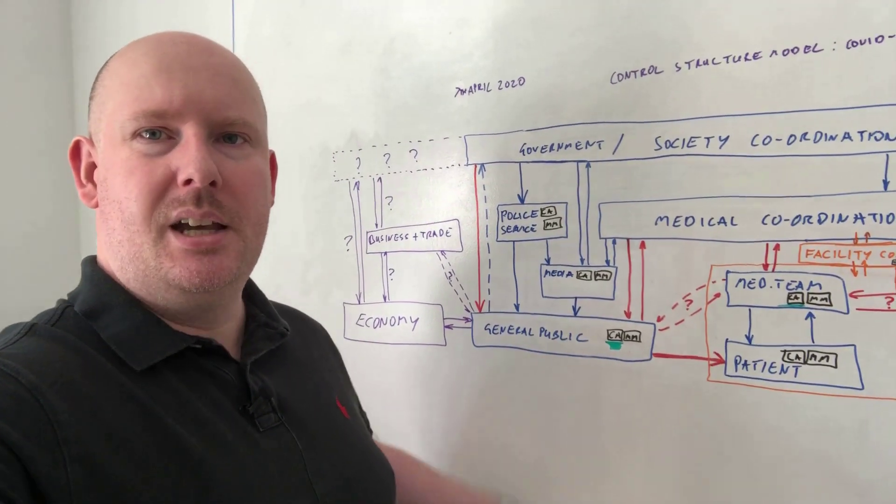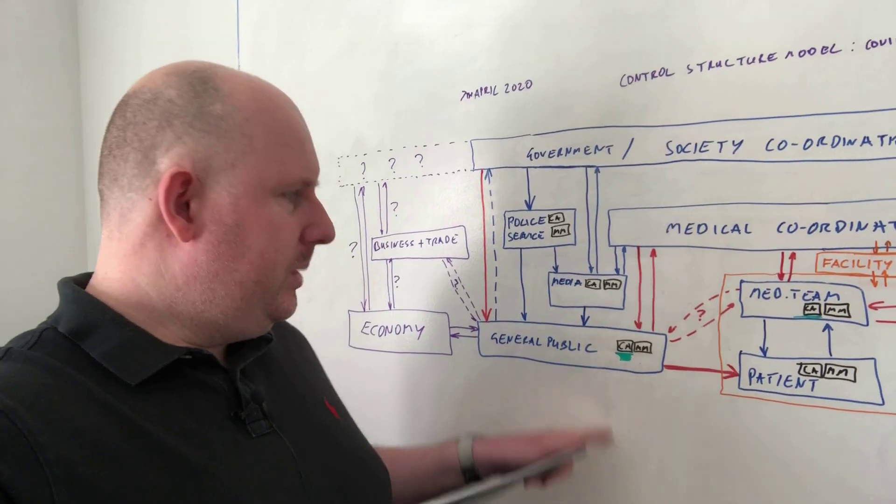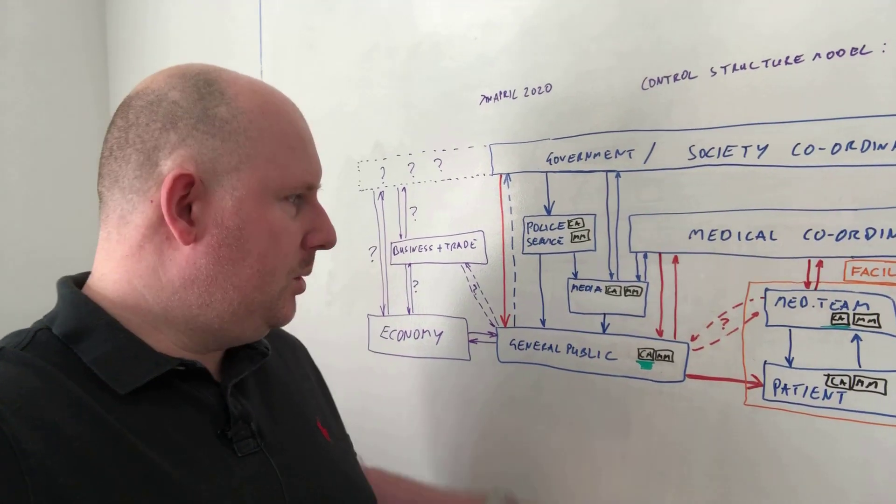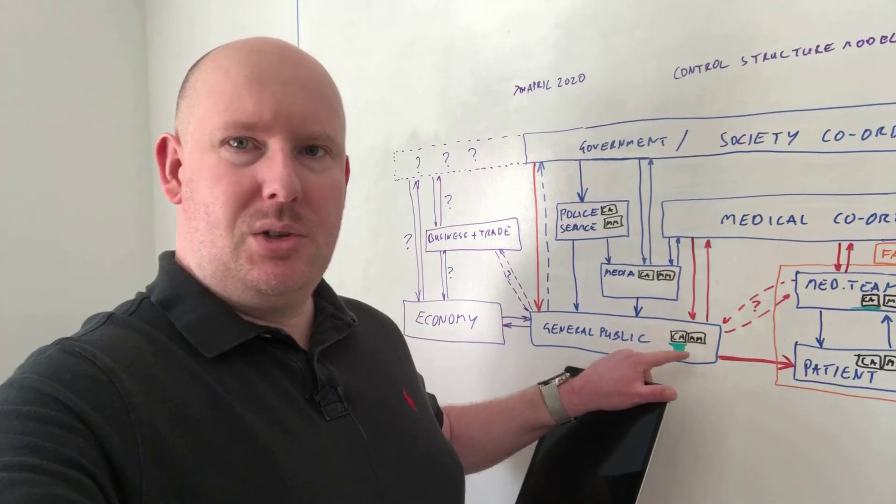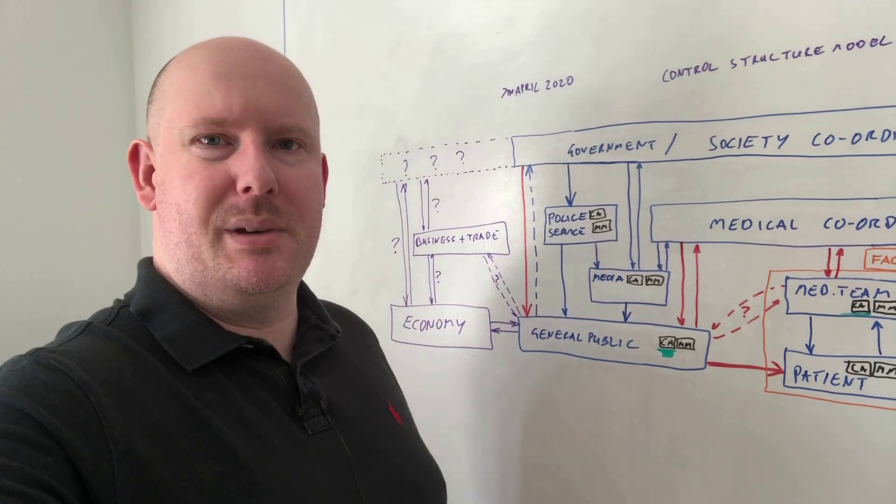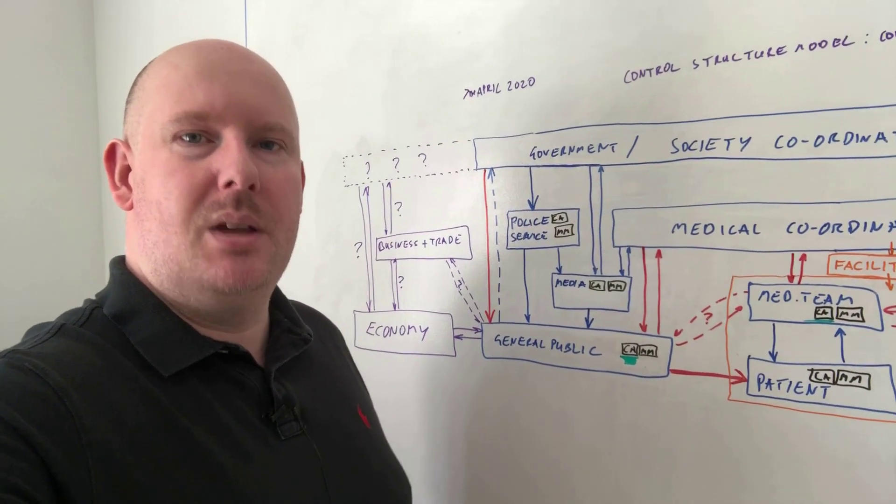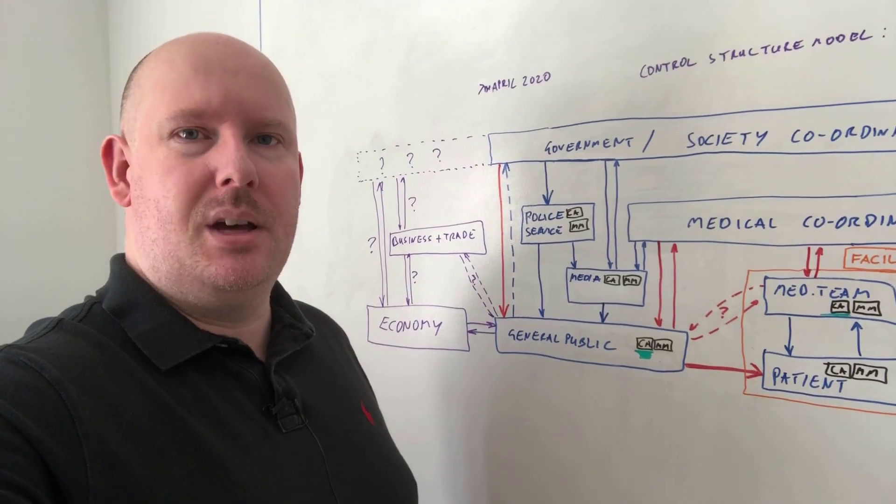But if the mental model of the external public, the general public, has not been updated appropriately, then what do we expect when they behave the way that they do, go and have barbecues and things like that? So ultimately it's how their mental model and their control algorithm has been updated with that new information so that they have a chance to be able to behave accordingly.